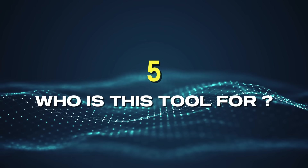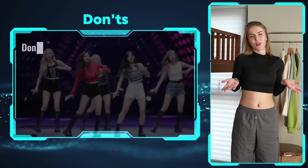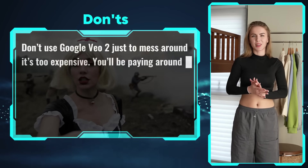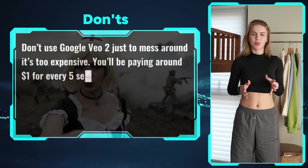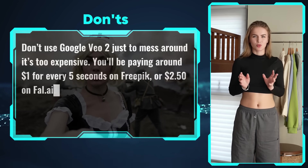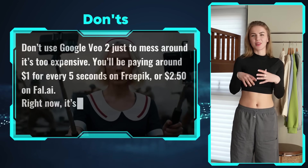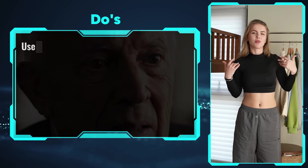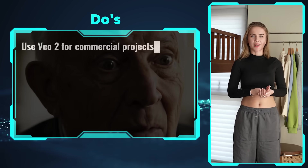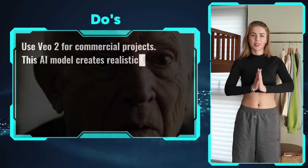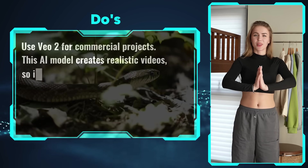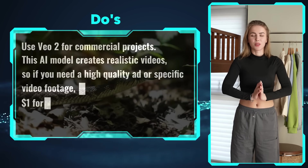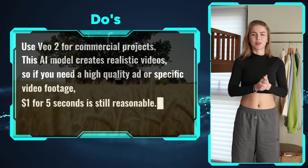Five: who is this tool for? The don'ts: don't use Google Veo 2 just to mess around — it's too expensive. You'll be paying around $1 for every five seconds on FreePik or $2.50 on fal.ai. Right now, it's just not cost-effective for AI filmmaking. The do's: use Veo 2 for commercial projects. This AI model creates realistic videos, so if you need a high-quality ad or specific video footage, $1 for five seconds is still reasonable.